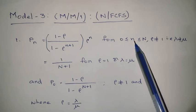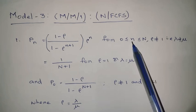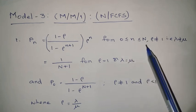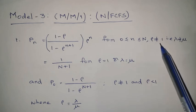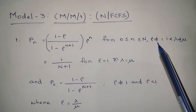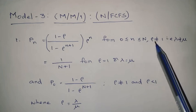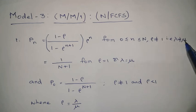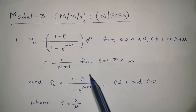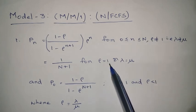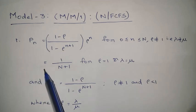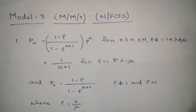One condition is that ρ must not equal 1 — meaning λ/μ ≠ 1, so λ should not equal μ. If ρ equals 1 (i.e., λ equals μ), then the probability of having n customers in the system equals 1/(N+1).